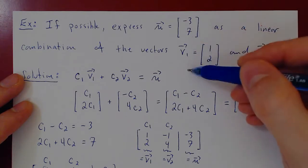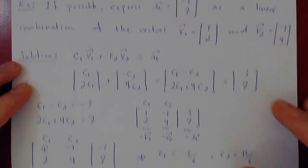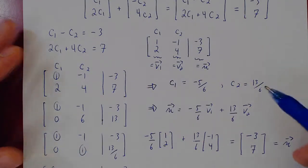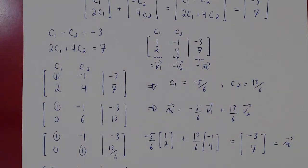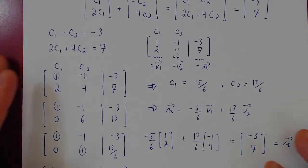Whether you have vectors in R2, R3, or Rⁿ for any n, and any number of vectors v1 through vm, you would end up solving just a slightly larger system — that's the only difference. Let's do one more example to show you the idea behind linear combinations: taking objects, whether spaces, lines, or planes, and trying to simplify them with just a few vectors.